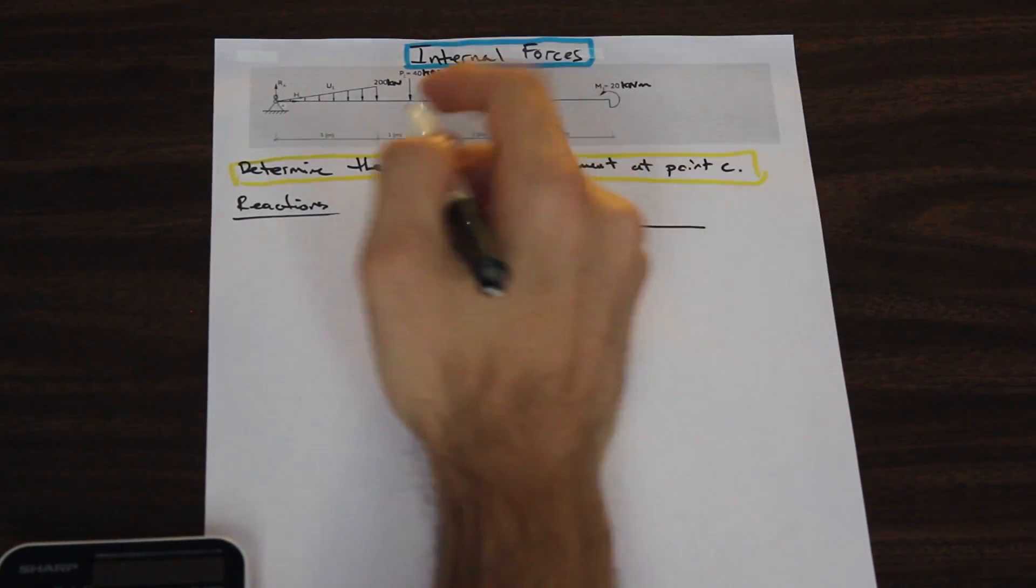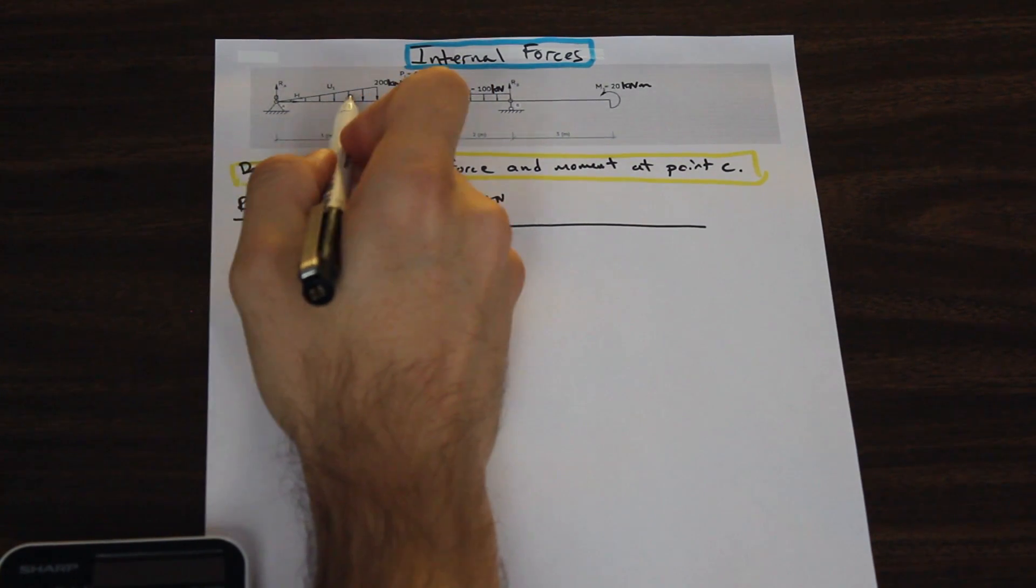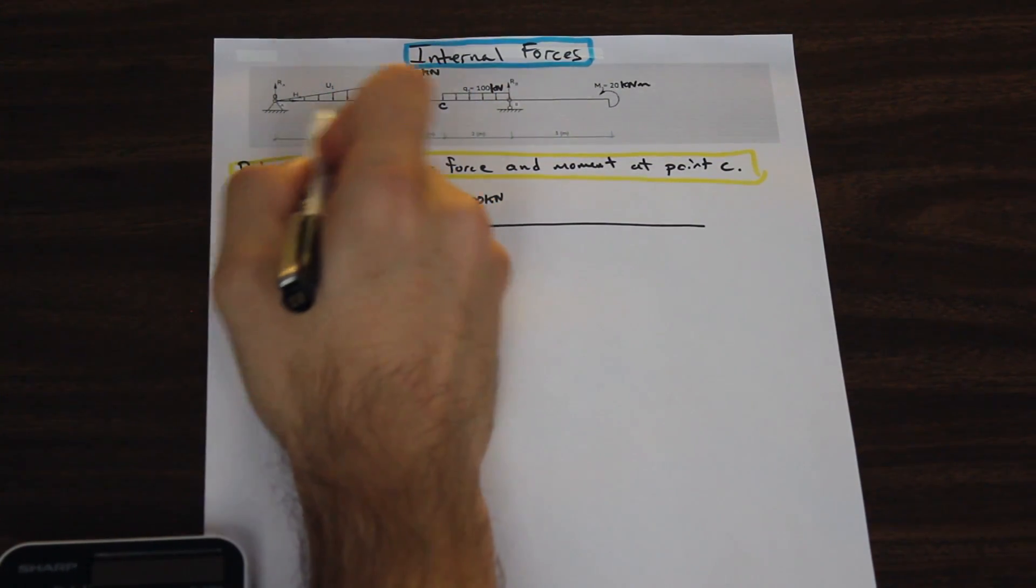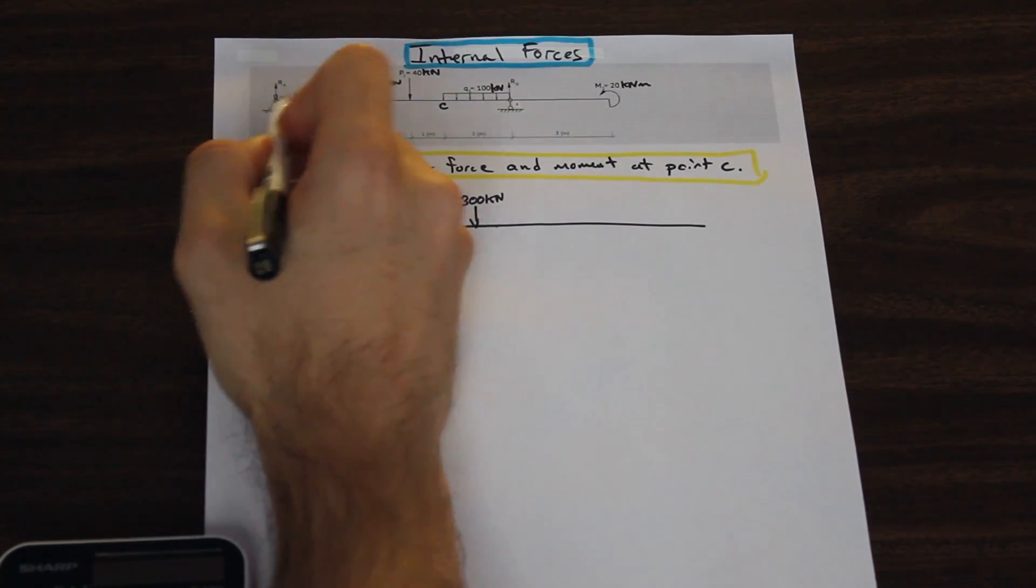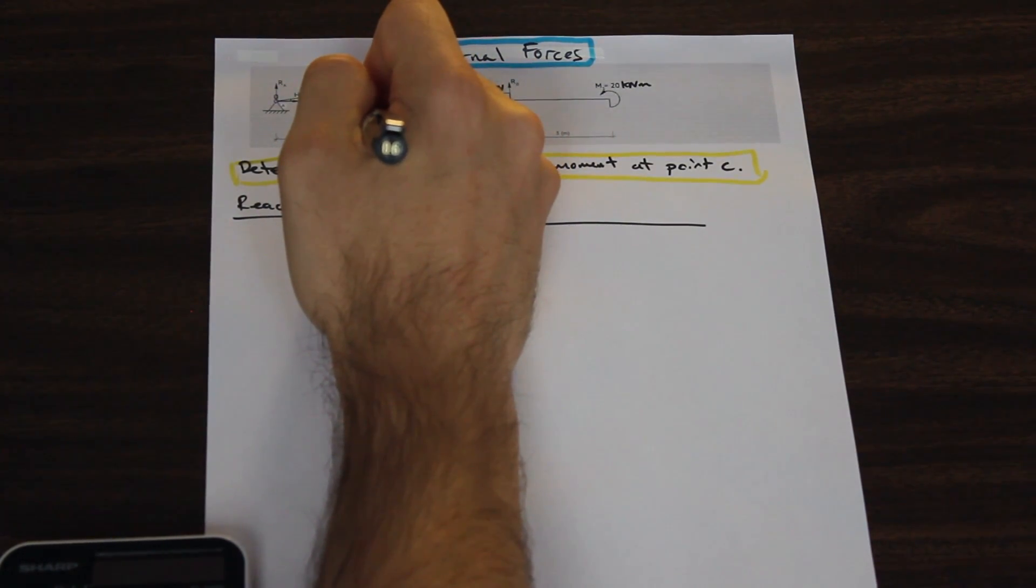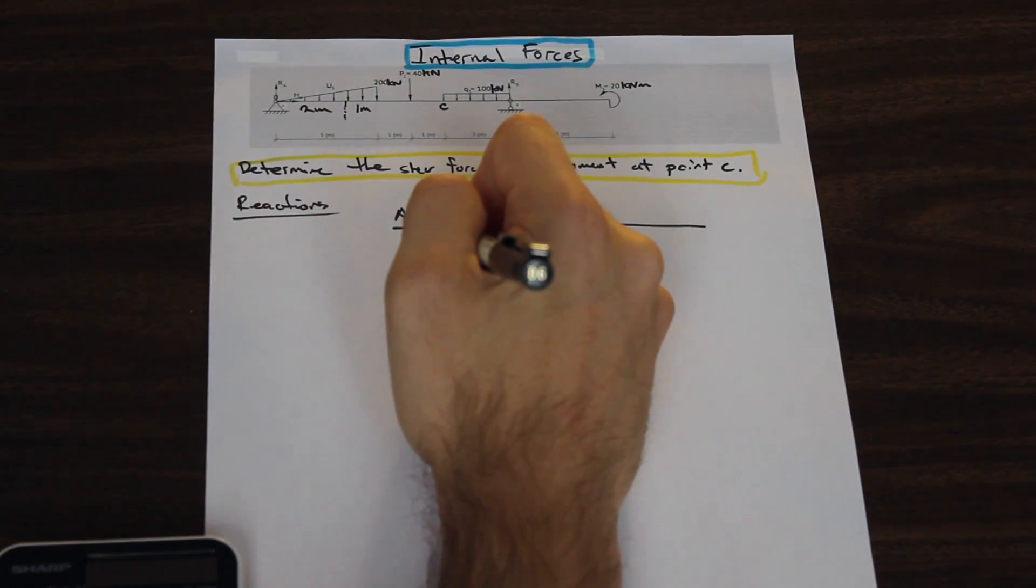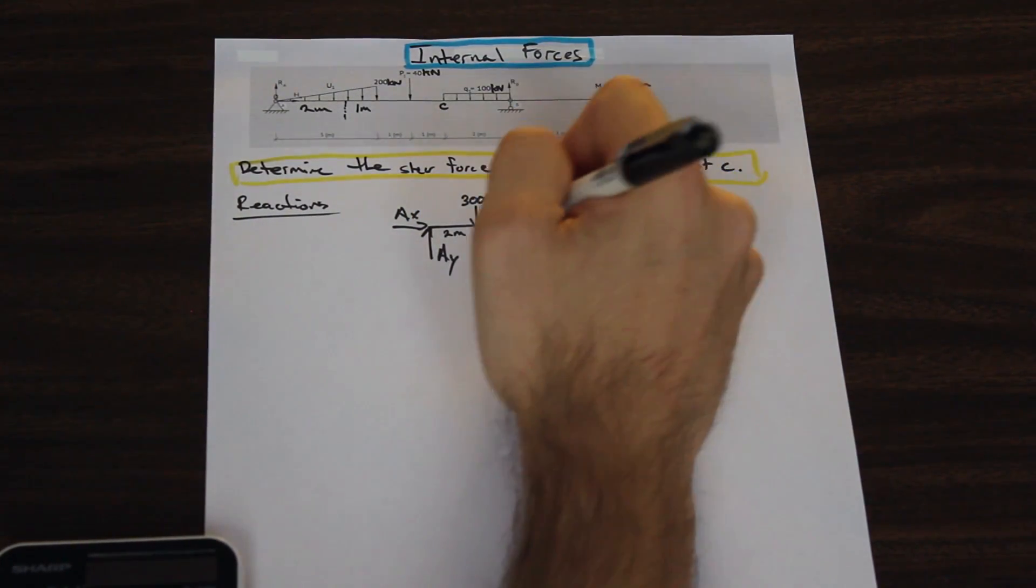As we know, the resolved force acts in the center of gravity of the shape. The center of gravity of the triangle is 2/3 times the distance from the small end, 1/3 from the tall end. So this is going to be 1 meter, and this is going to be 2 meters. So this is a 2 meter section here.